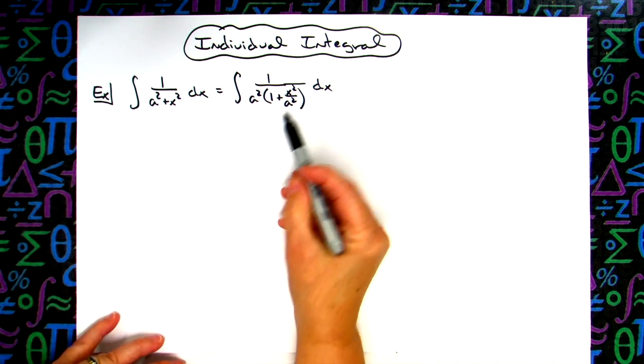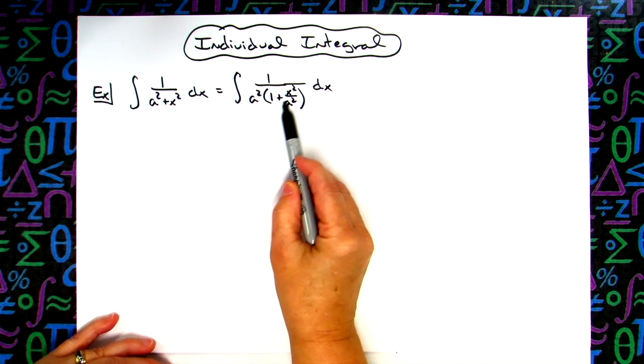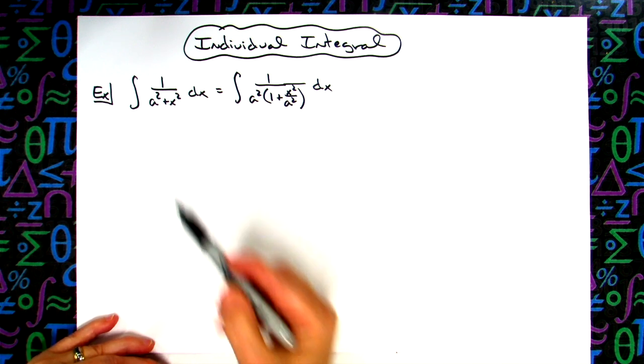Okay, now point being here is when I multiply a squared times x squared over a squared, the a squared is of course that will give me that x squared term.